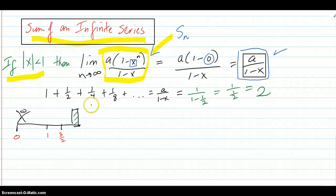So, 1 plus one-half plus one-fourth plus one-eighth all adds up to a over 1 minus x. And a is 1, and x constant ratio is one-half, and adds up to 2.